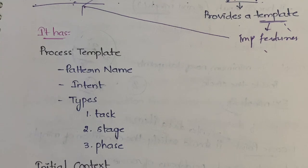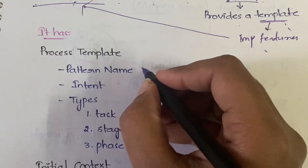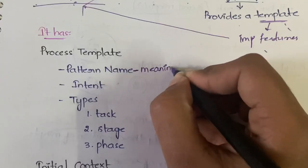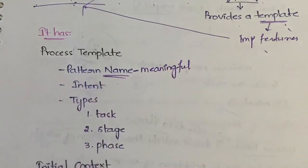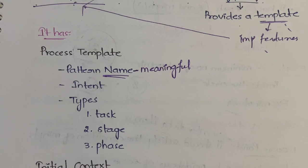The first subcategory is pattern name. We have to give our pattern a name in order to identify it, and this name has to be a meaningful one — on looking at the name you must be able to understand something about the pattern. So whatever name you're giving, it has to be meaningful; by looking at the name itself, people should be able to understand about the pattern.